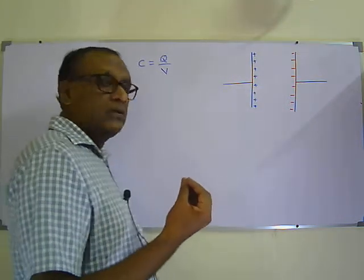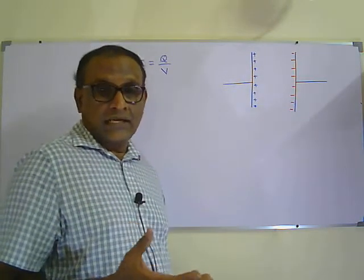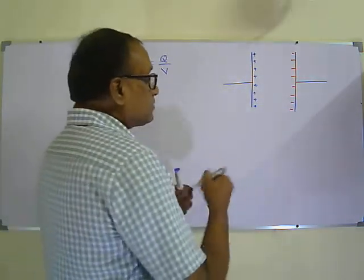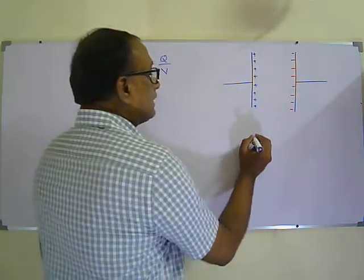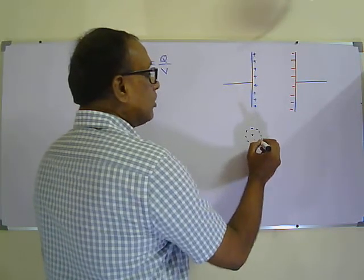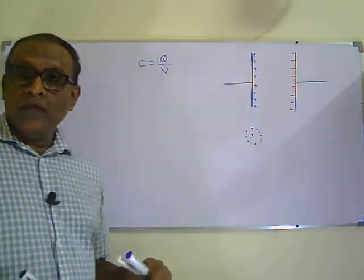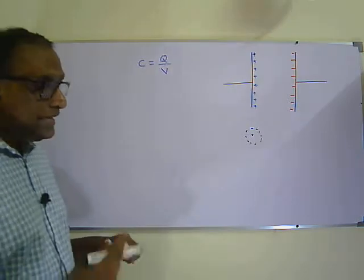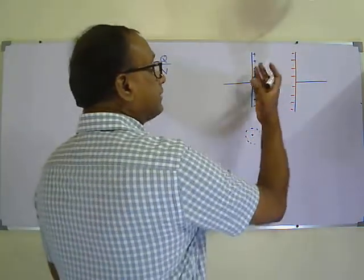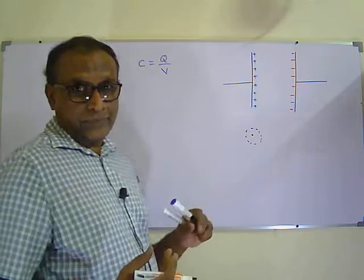Now when we think about the dielectric material, it consists of atoms. In an atom, the nucleus is at the center and the electrons orbit the nucleus on a circular path. But when we insert this dielectric material in the region between the parallel plates, what happens?